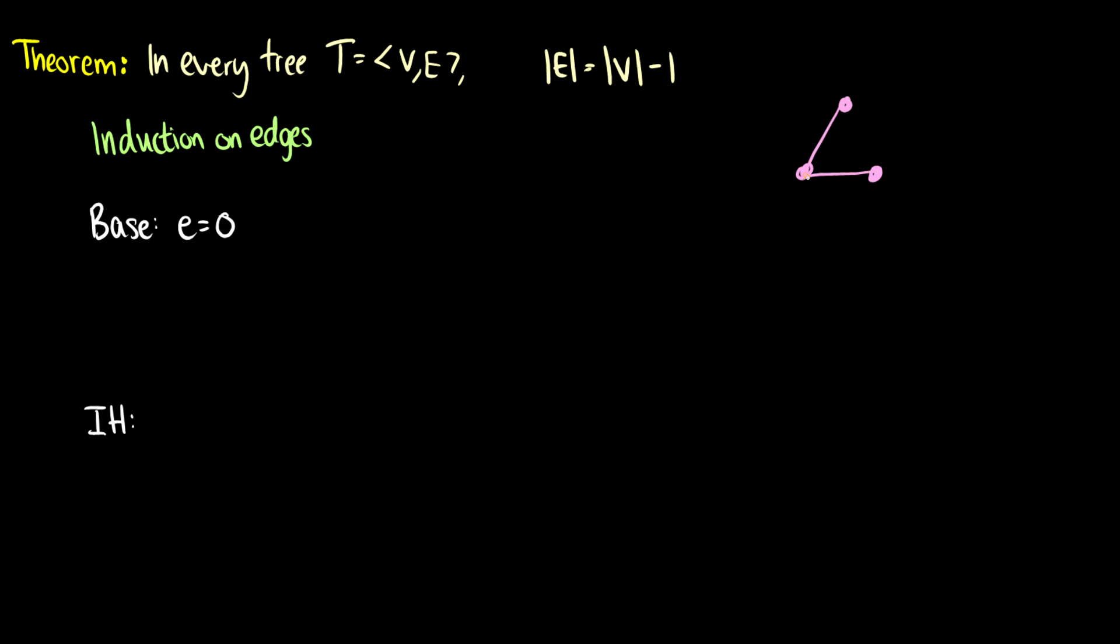Two edges, three vertices. So 3 minus 1 is 2. It holds. So to prove this, we'll do an induction on edges. So here we go. The base case, E is equal to 0.